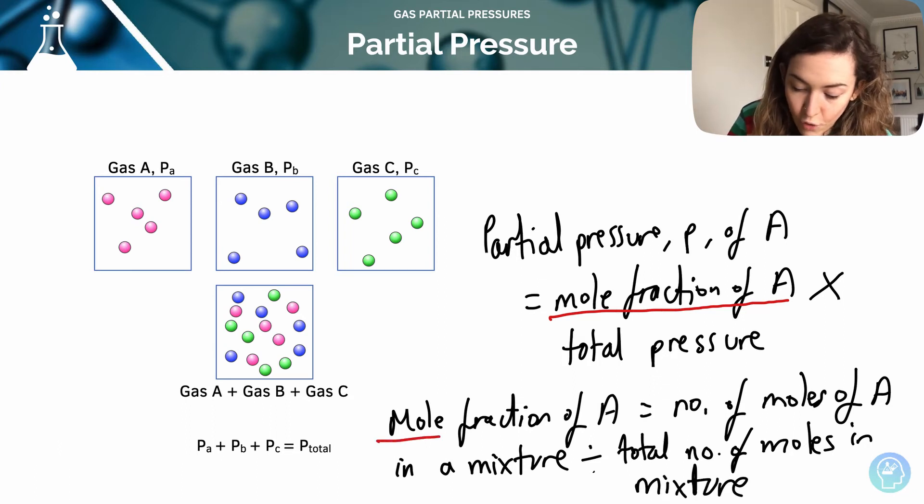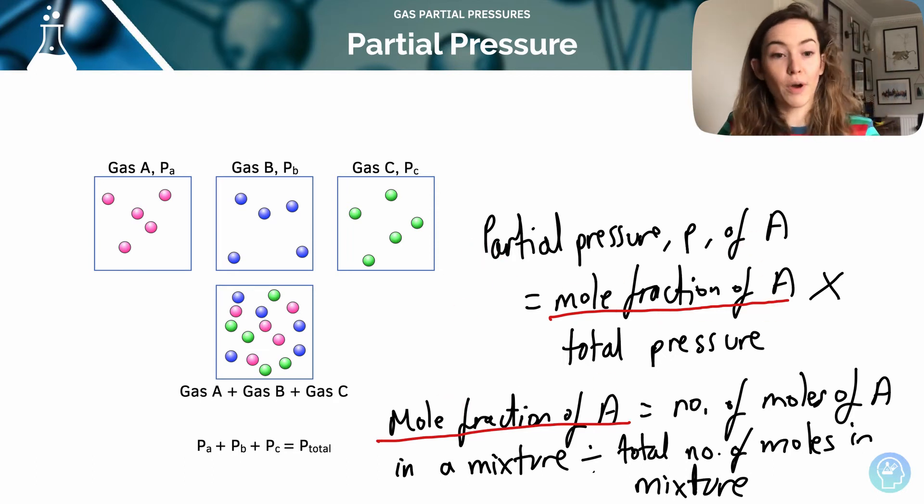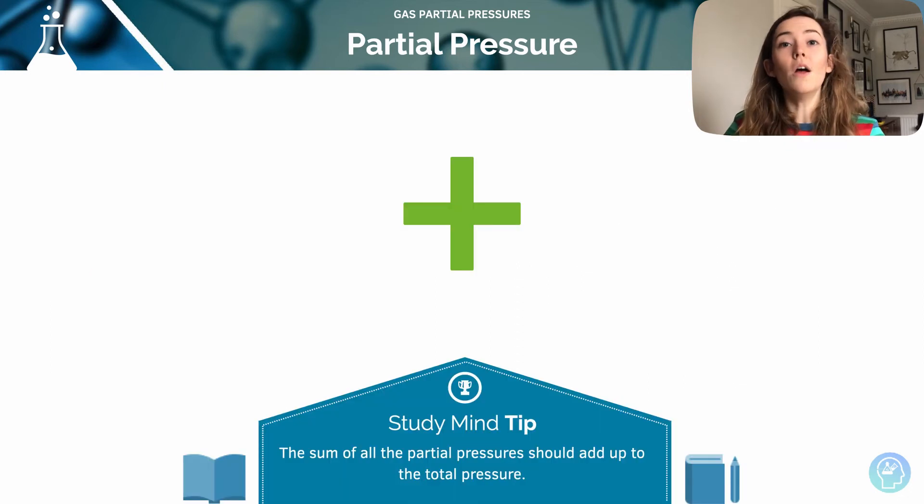So first of all you need to make sure you've got mole fraction and then you can put it into this equation here and you can work out the partial pressure. The sum of the partial pressures should all add up to the total pressure of the system.